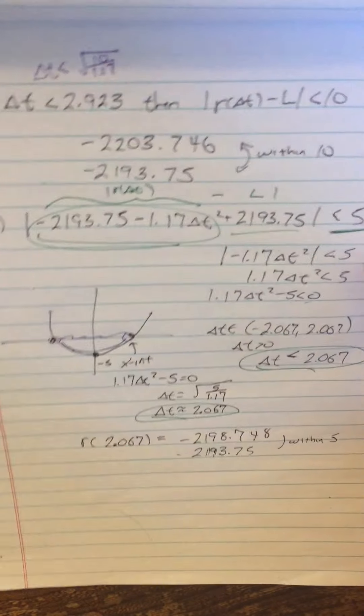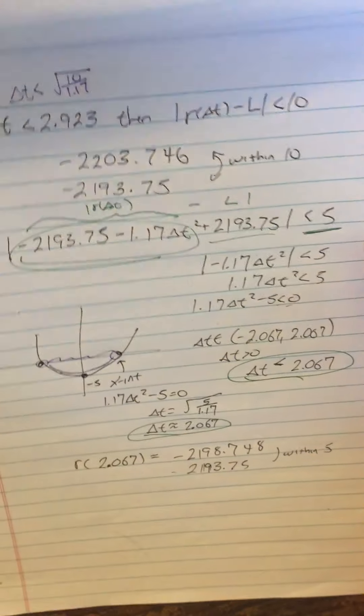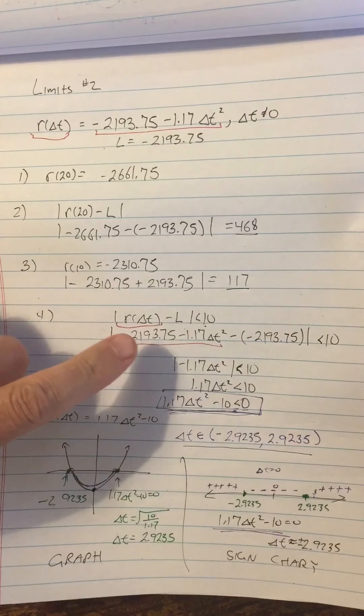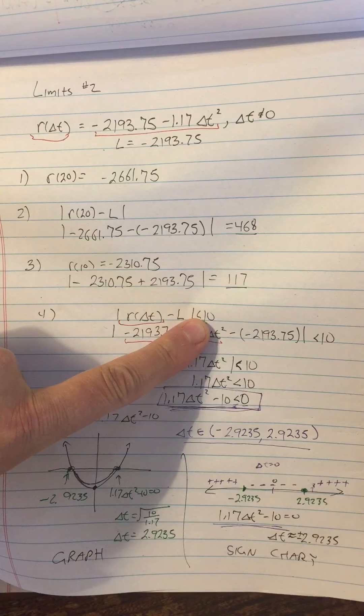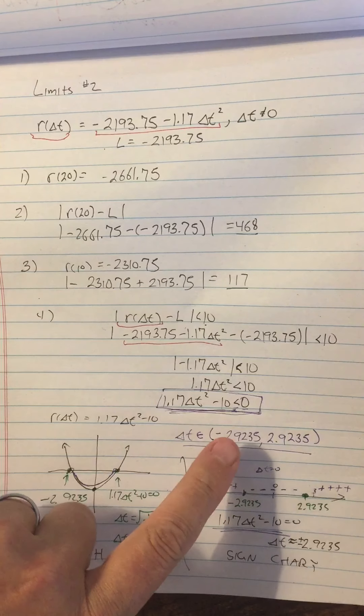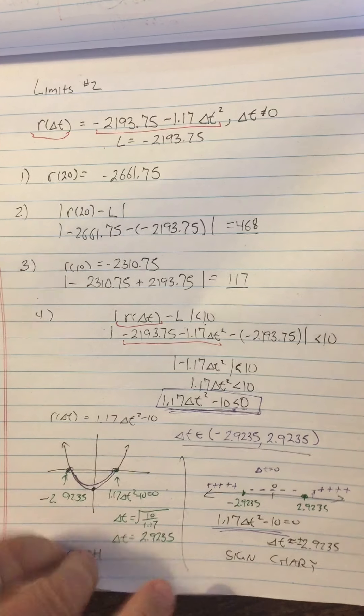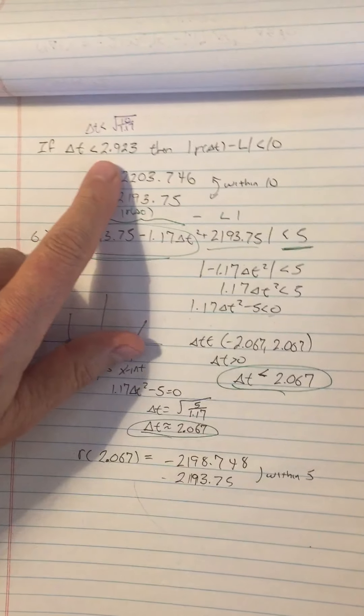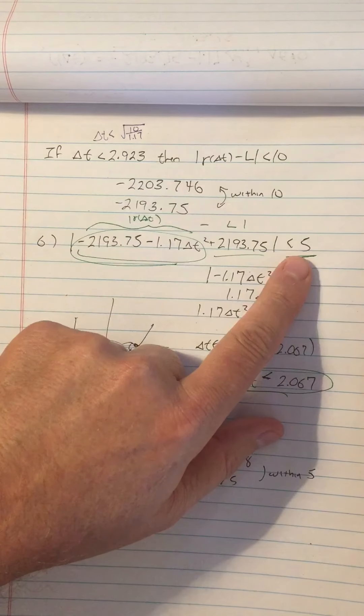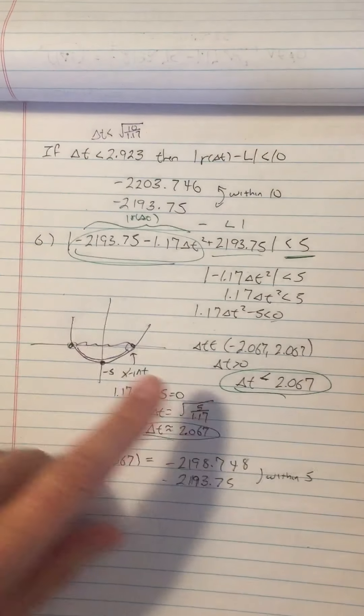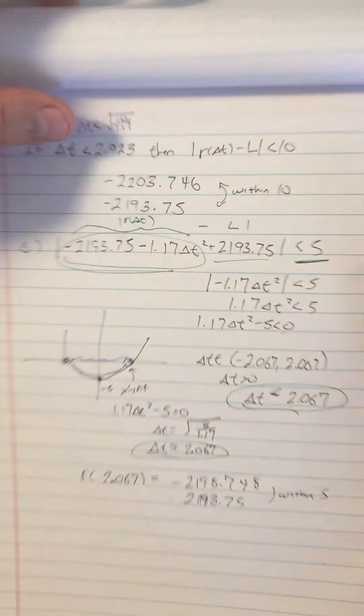All right, so we have found that if we want our value to be within 10 of the limit, we can use delta t is less than 2.923. If we want to be within 5 of the limit, all we have to use is a delta t that's less than 2.067.